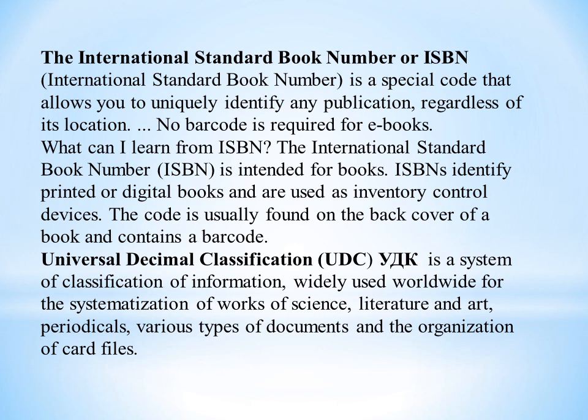The International Standard Book Number (ISBN) is a special code that allows you to uniquely identify any publication, regardless of its location. The International Standard Book Number is intended for books. ISBNs identify printed or digital books and are used as inventory control devices. The code is usually found on the back cover of a book and contains a barcode.